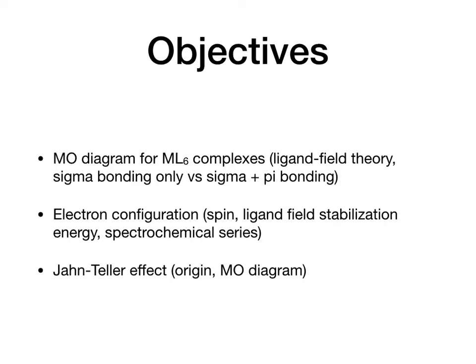Our objectives today are the following. First, we're going to discuss the MO diagram for ML6 complexes — those are the octahedral structures. We're going to talk about ligand field theory. We're going to discuss how the MO diagram can be constructed by considering only sigma bonding, and also both sigma and pi bonding — two major scenarios.